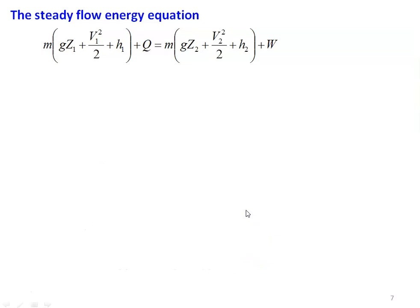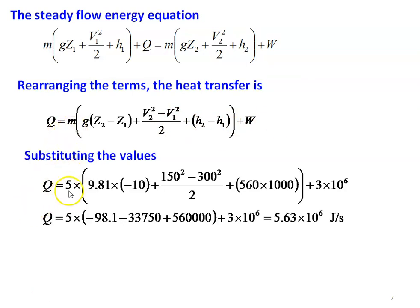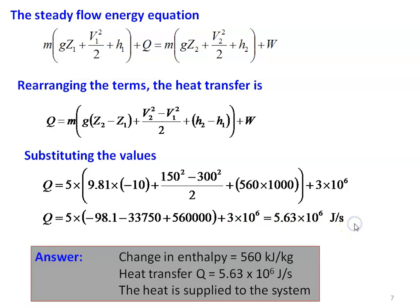Writing the steady flow energy equation in full form, then rearranging to calculate heat transfer Q, retaining Q on the left-hand side. Q = M·[g(Z₂ − Z₁) + (V₂² − V₁²)/2 + (H₂ − H₁)] + W. Substituting: M = 5 kg/s, g = 9.81, Z₂ − Z₁ = −10, (150² − 300²)/2, plus 560×1000 J/kg, plus 3×10⁶ W. The heat transfer equals 5.63×10⁶ J/s. Since the value is positive, heat is supplied to the system.